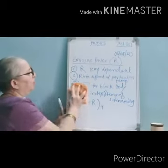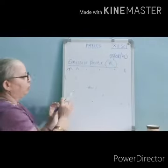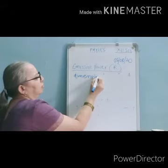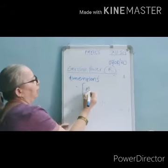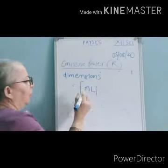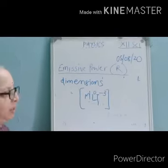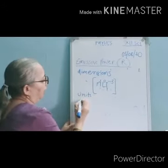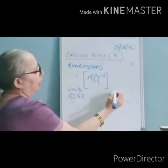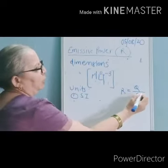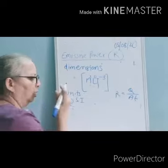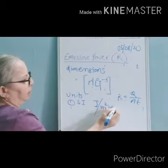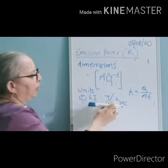Now we will define the dimensions and units of emissive power. Its dimensions are M¹ L⁰ T⁻³. Its SI unit is derived from the formula R = Q / (area × time): energy is in joules, area in meters squared, and time in seconds. Therefore, the SI unit is joules per second per meter squared, which is watts per meter squared.